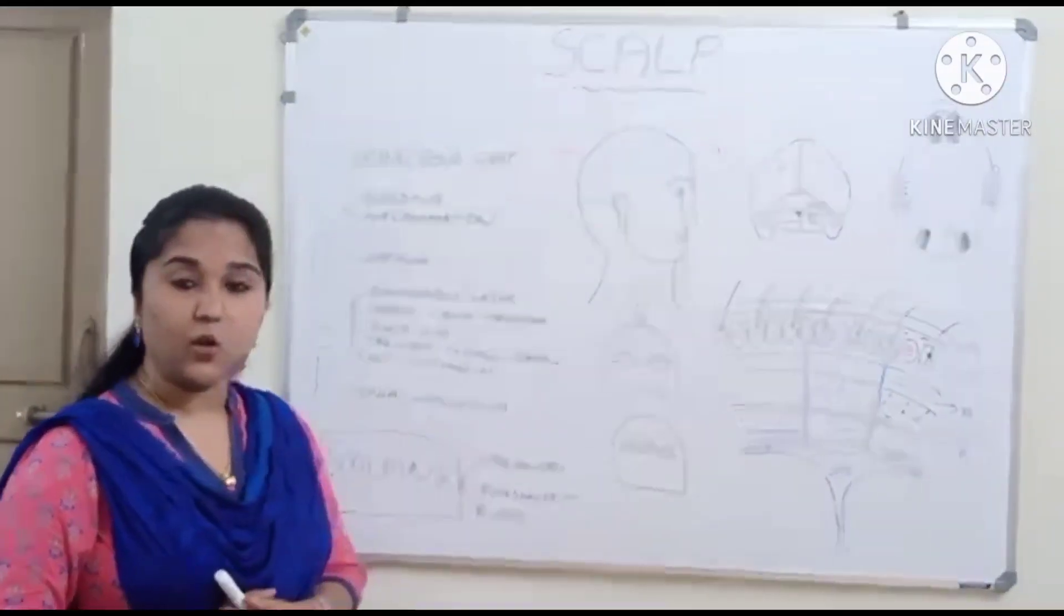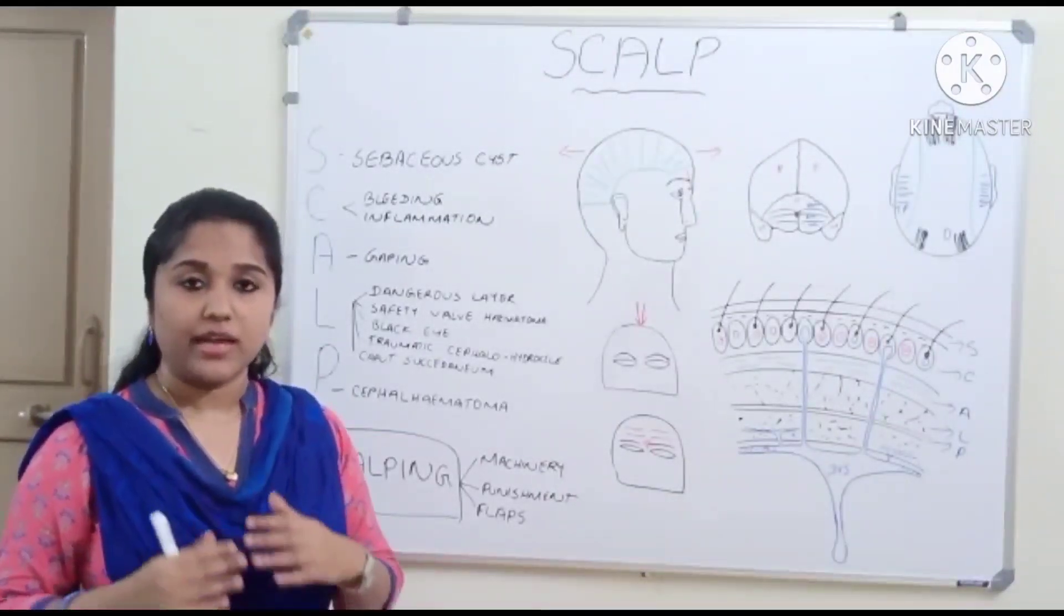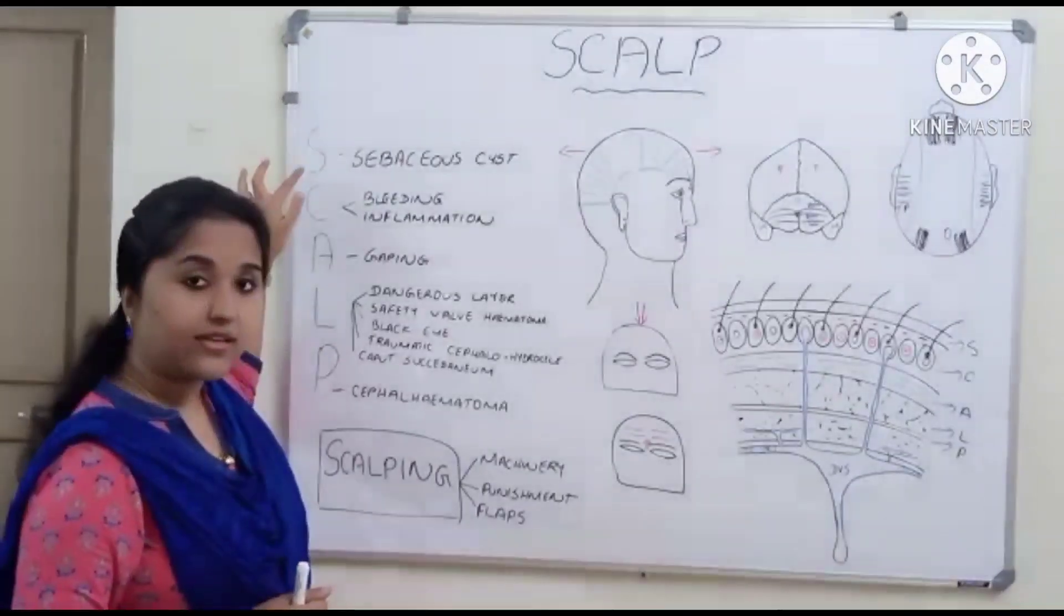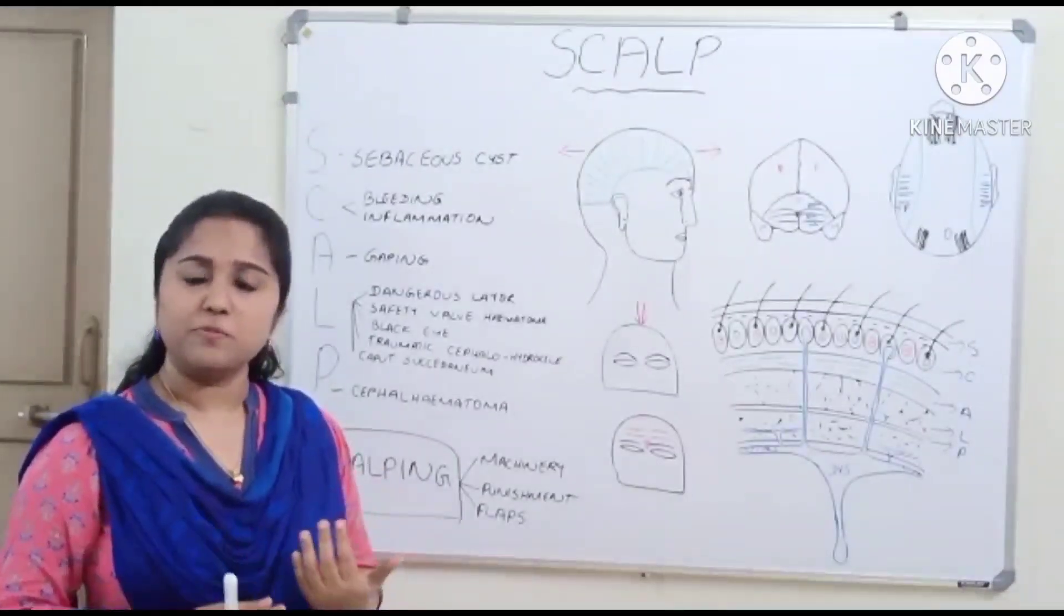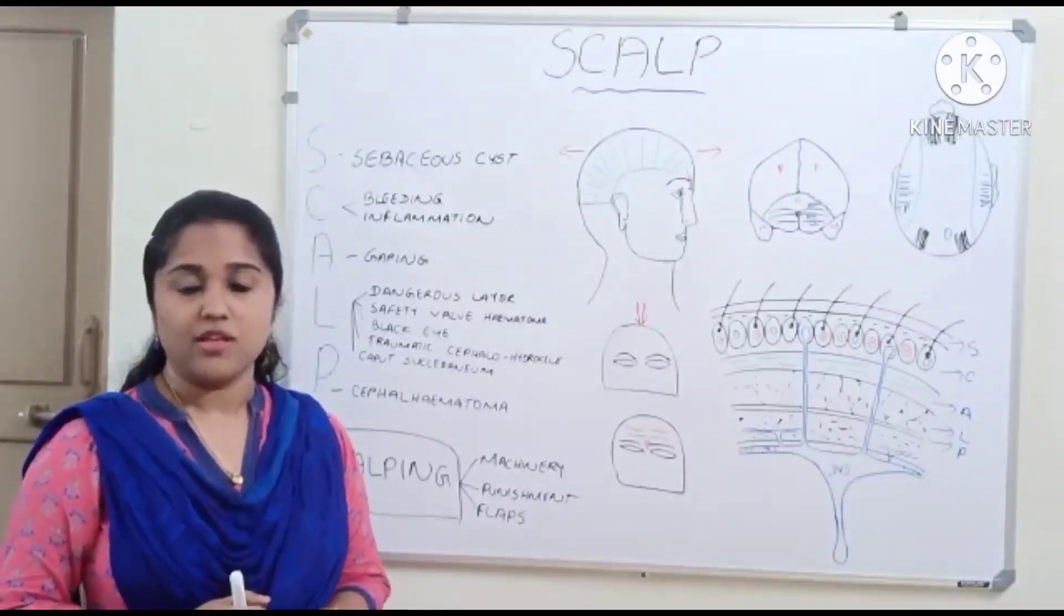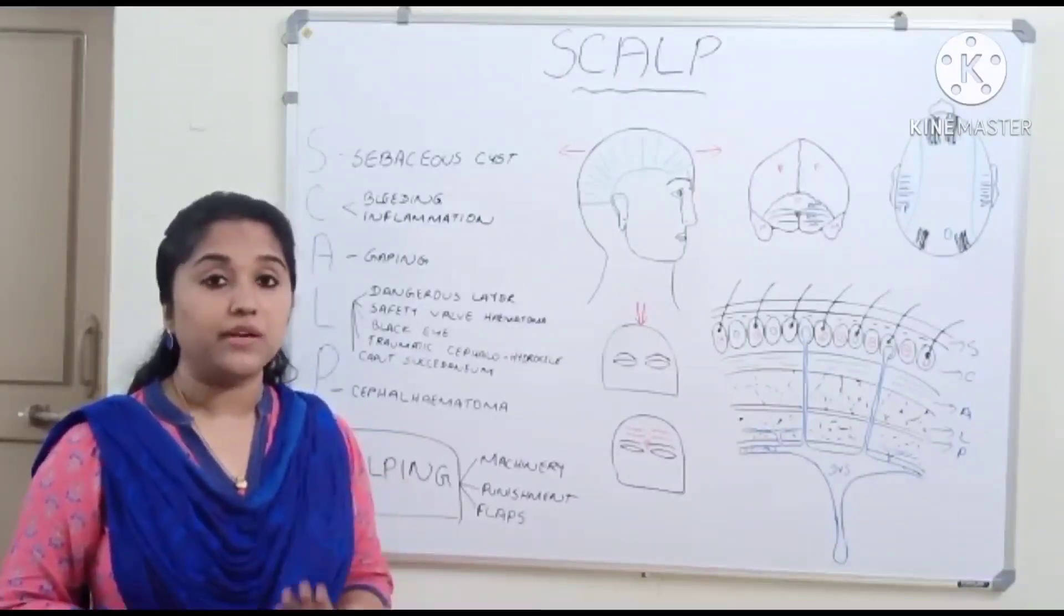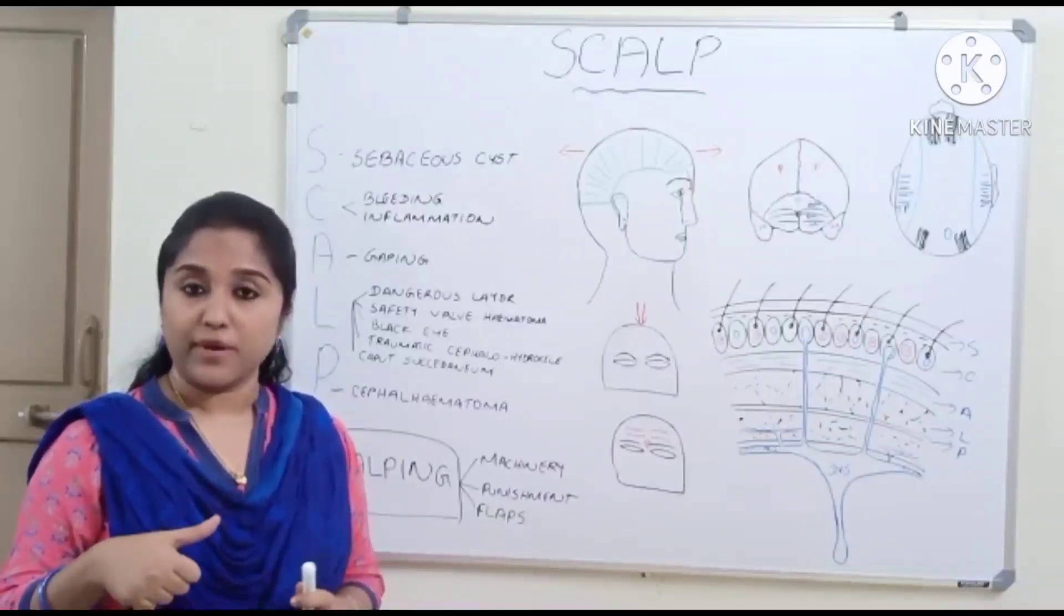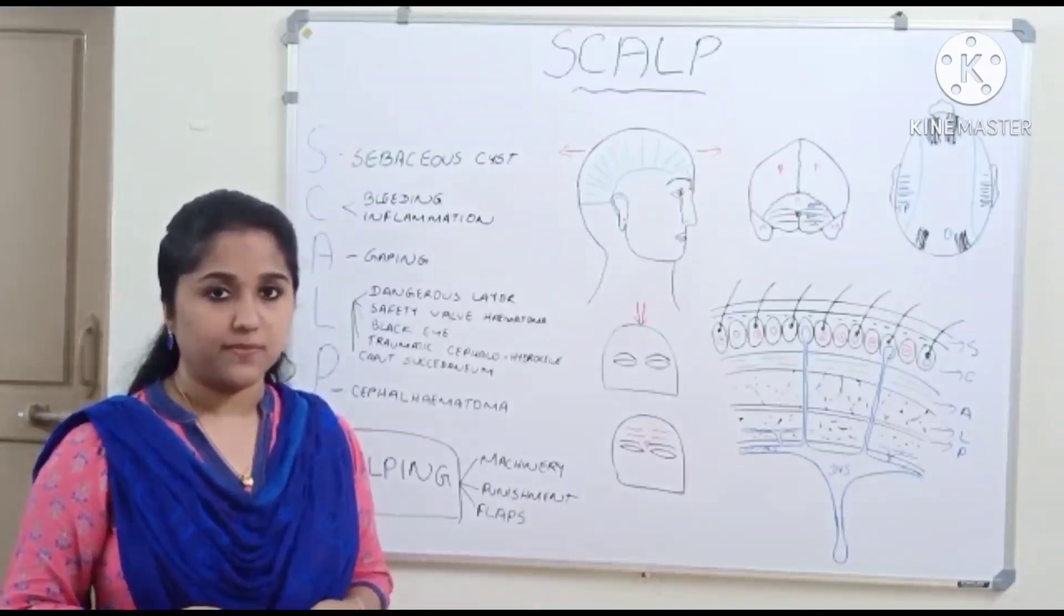The second layer is the close network of subcutaneous tissue. It is attached firmly to the overlying skin and underlying aponeurosis. It consists of many blood vessels and nerves. The blood vessels are attached very closely to the fibrous tissue, so in case of any open wound, the vessels get torn and cannot retract, leading to profuse bleeding. This can be stopped by pressure over the bone or by applying sutures.